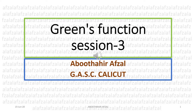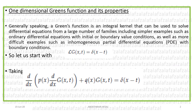Welcome students to the third session on Green's functions. As we have already studied the definition of Green's function, today we will study the properties of one-dimensional Green's function. Green's function is a special technique to solve inhomogeneous partial differential equations with boundary conditions. The basic property states that an operator L operating on a Green's function G produces the Dirac delta function δ(x − t), which equals one only at x = t and zero elsewhere.